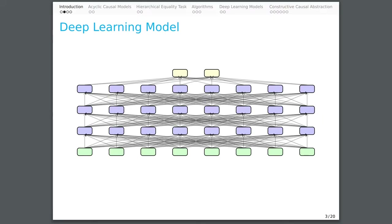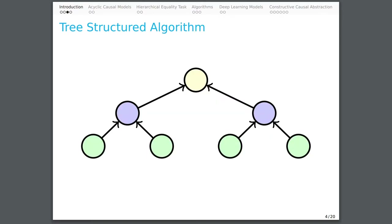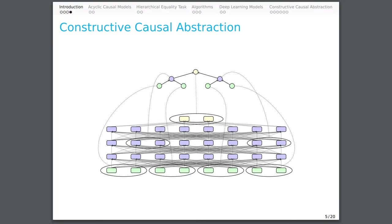Deep learning models consist of dense, fully connected layers of neurons with no easily interpreted structure. Tree-structured algorithms, on the other hand, consist of sparsely connected variables with easily interpreted structure. Theories of causal abstraction provide the mathematical tools we need to analyze deep learning models as implementing tree-structured algorithms.